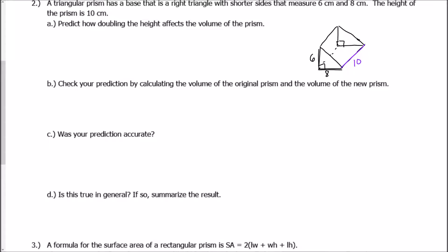Question A asks us to predict how doubling the height affects the volume of the prism. Obviously, this is individual to you. This is just your prediction. It's not right or wrong. So I want you guys to pause and actually do that part if you haven't done so already, and then come back to me. I'm not going to answer A. We're going to answer B.